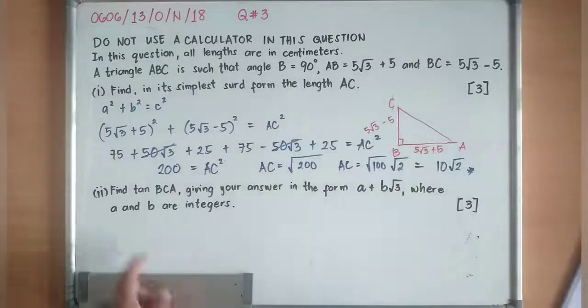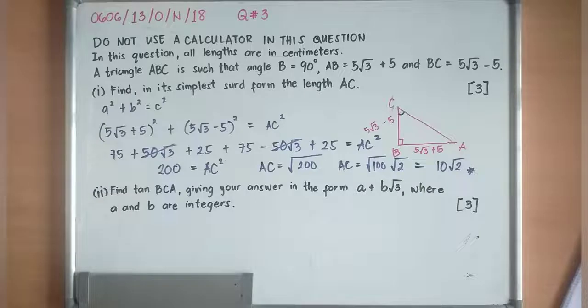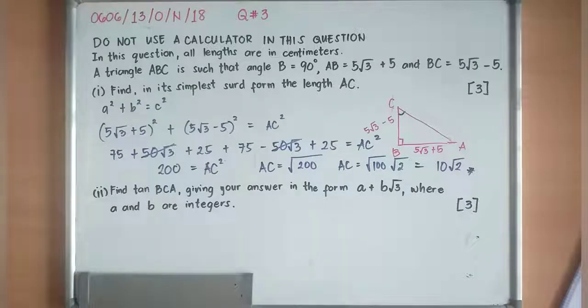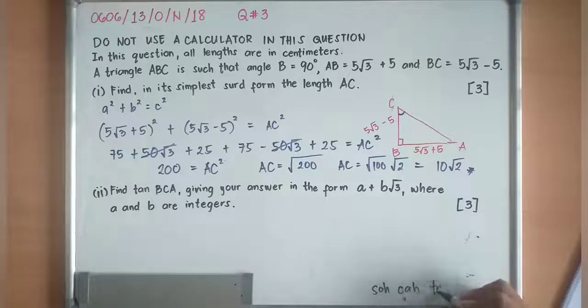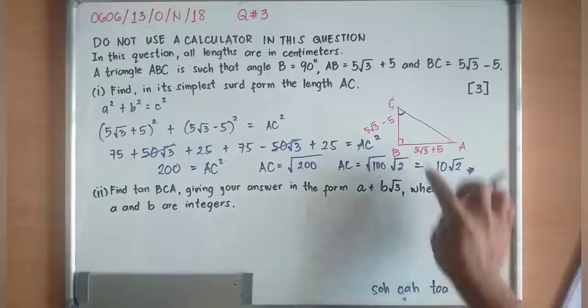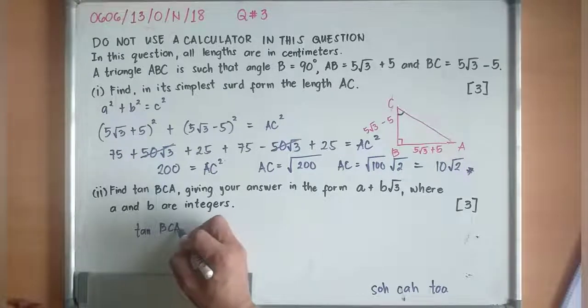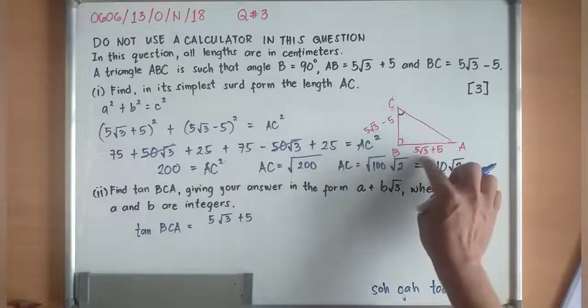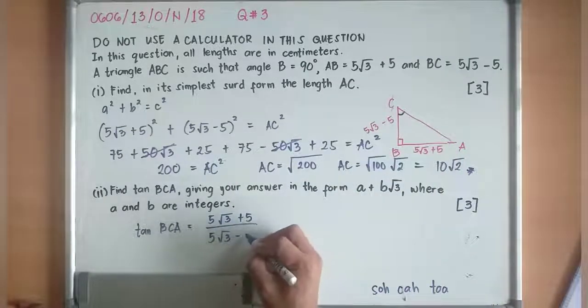If this is now 10√2, find tangent BCA. BCA, this is the angle that we are dealing with, giving your answer in the form a + b√3 where a and b are integers. Always remember in SOHCAHTOA or trigonometric ratios, tangent BCA is always equivalent to opposite over adjacent. So it will become tan BCA is equivalent now to (5√3 + 5), which is the opposite of that angle, divided by the adjacent which is (5√3 - 5).